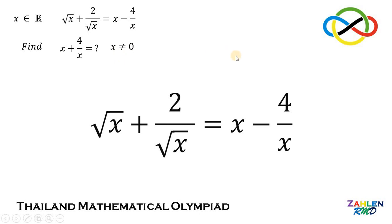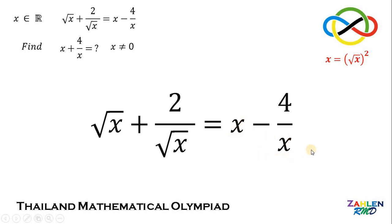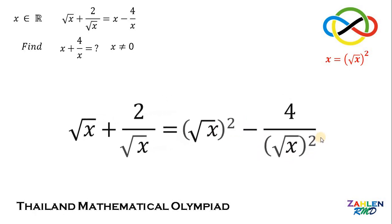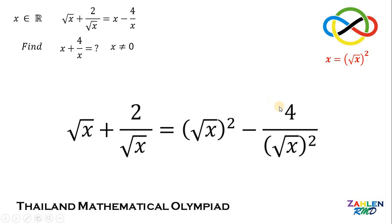Now, how are we going to answer this question? Take note that we have a minus sign here, so maybe we can use the difference of two squares. Our first step is to let x equal square root of x, quantity squared. Therefore, we can replace 2x with square root of x, quantity squared. Also take note that 4 is just 2 squared. Now let's use some laws of exponents.